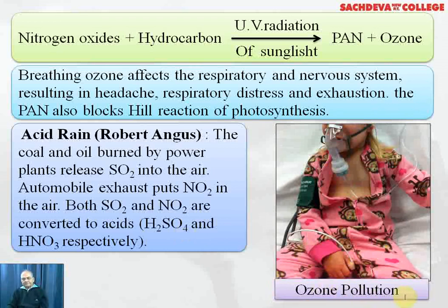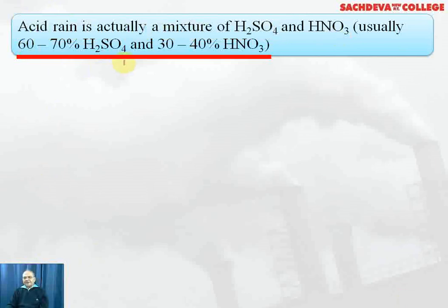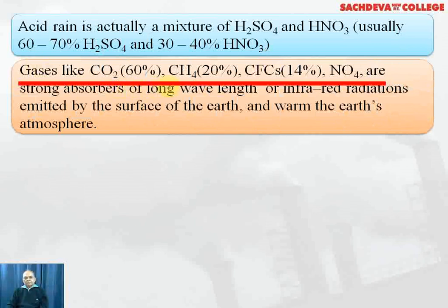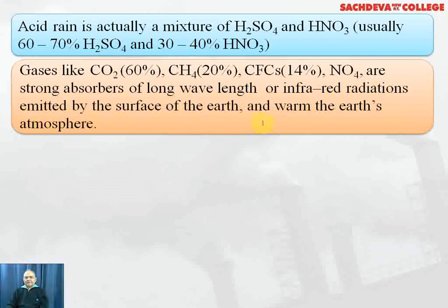Acid rain is actually a mixture of sulfuric acid and nitric acid, usually containing 60 to 70% sulfuric acid and 30 to 40% nitric acid. Gases like CO2 (60%), CH4 (20%), chlorofluorocarbons (14%), and NO4 are strong absorbers of infrared radiations emitted by the earth's surface, and that is the cause of global warming.